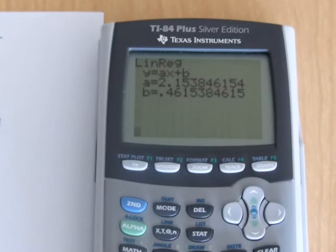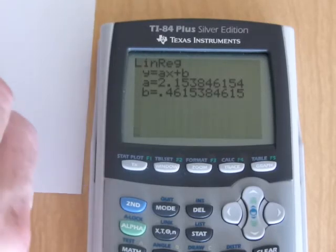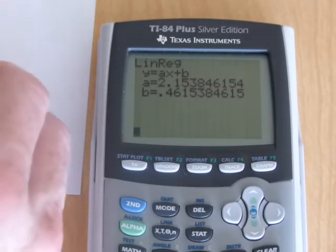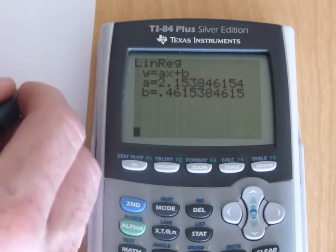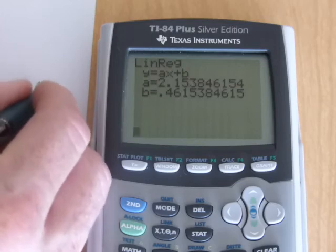So that's my equation that I end up with. I get Y equals A is 2.2 approximately X plus my B value 0.46.